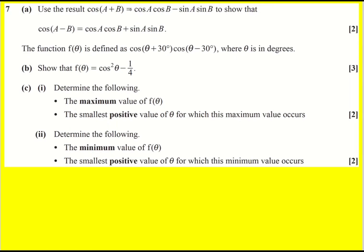We're given the addition formula cos(a+b) and essentially asked to derive the addition formula cos(a-b). What we can do is let b equal minus c and just replace all instances of b by minus c. I would avoid letting b equal minus b — that's a bit confusing. I'm going to get our result in terms of c and then turn it back into b at the end, because you can call them anything you like.